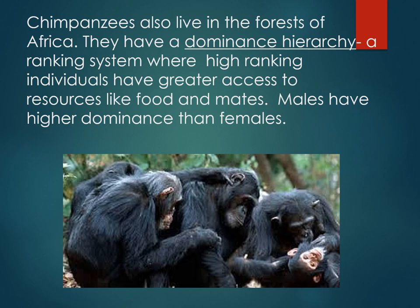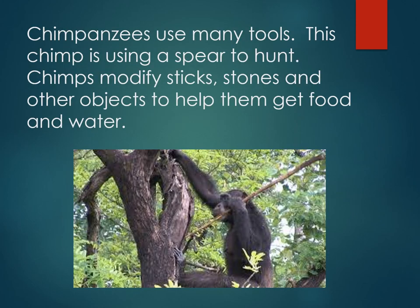Chimpanzees are one of our closest relatives — we share 98% of our DNA with chimpanzees. They also live in the forests of Africa and have a dominance hierarchy, a ranking system where high-ranking individuals have greater access to resources like food and mates. Males can have higher dominance than females. Chimpanzees use many tools; this chimp is using a spear to hunt, and chimps also modify sticks, stones, and other objects to help them get food and water.